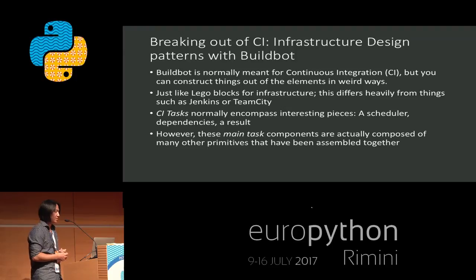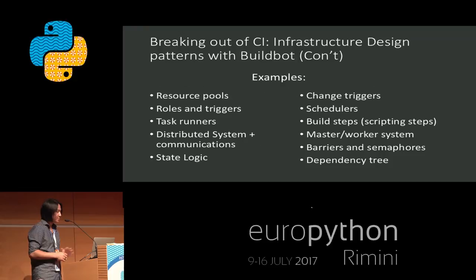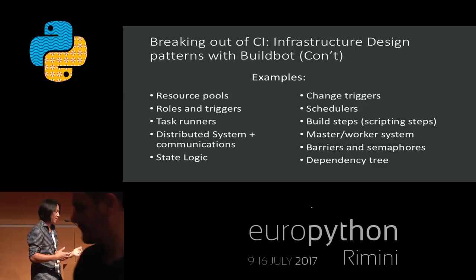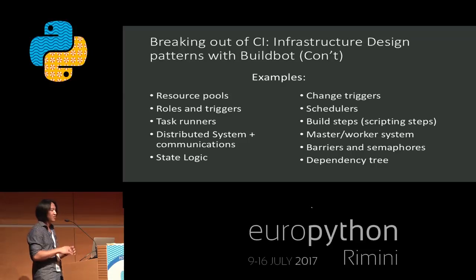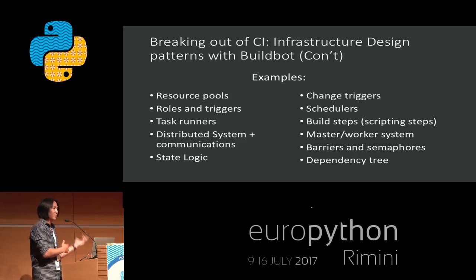Continuous integration tasks generally incorporate a lot of interesting pieces: you have a scheduler, you have dependencies, and you usually have some type of result at the end. But the main task components are actually composed of other primitives that you can break up into smaller pieces and utilize if you choose the right pieces. Some of the more notable ones are triggers, resource pools, distributed system communications, the scheduler itself, and build steps. What I'm going to show you today is that you can do a lot more with some of these components — and because all the things are split up, BuildBot gives you the option to wire them in unusual ways, revealing that upper layer to you.